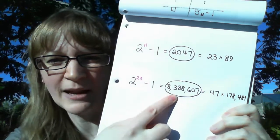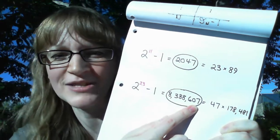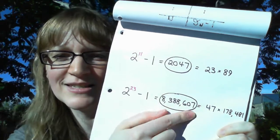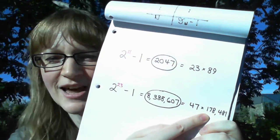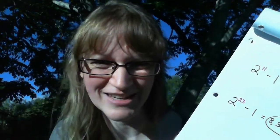And we get my next favorite number, which is over a million, 8,388,607. This is equal to 47 times 178,481. So glad that calculators exist.